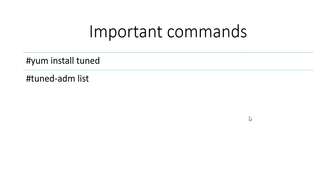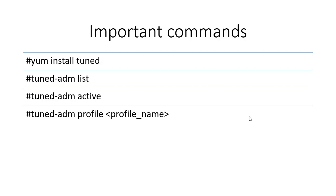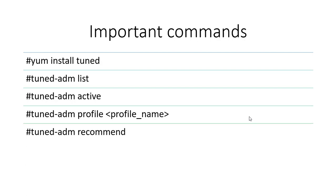The 'list' subcommand lists all profiles available in the system. 'Active' shows which is the active profile. If you want to select or change the active profile, use tuned-adm profile followed by the profile name. 'Recommend' shows the recommended profile for the system. In the exam they may give you a profile directly or ask you to set up the recommended profile.